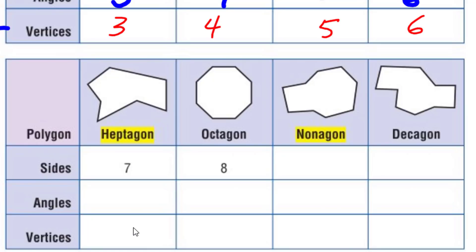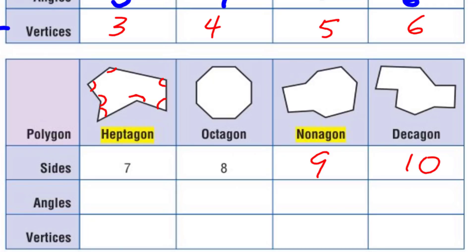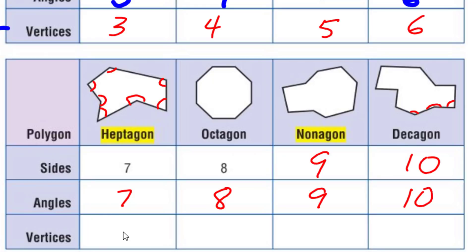Going up: a heptagon has seven sides, an octagon has eight sides — that's what we saw above. A nonagon — like 'non,' meaning not... actually nine sides — and then a decagon, like a decade, has ten. They're all polygons. Counting angles: the heptagon has seven angles, the octagon has eight, the nonagon has nine, and of course the decagon has ten — because every change in line direction creates an angle, and they have to be straight lines. Vertices follow the same: seven, eight, nine, ten.